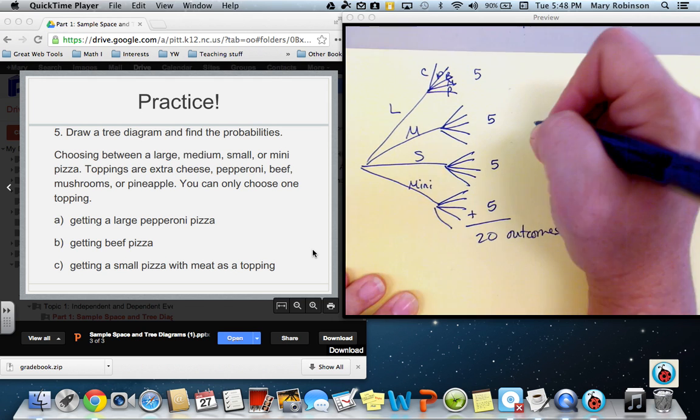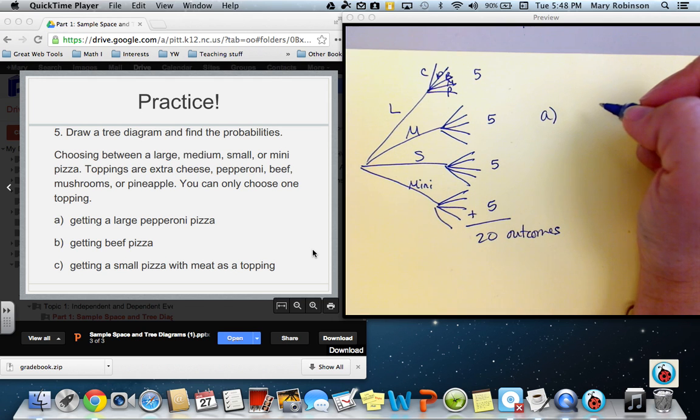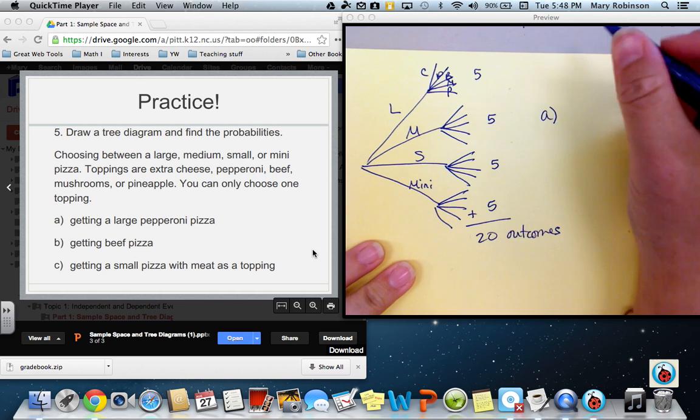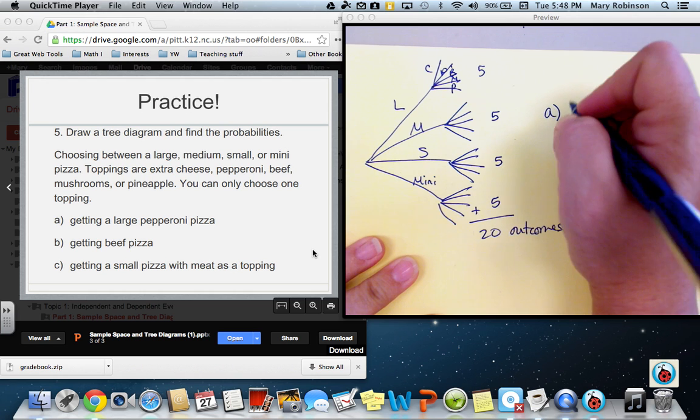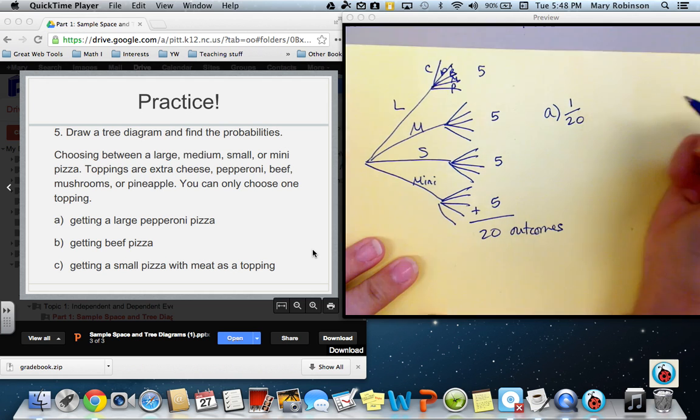So, for part A, if you were asked, what is the probability of getting a large pepperoni, you can see that there's just one of those, large pepperoni. There's one of those out of 20. So, therefore, the probability would be one out of 20.